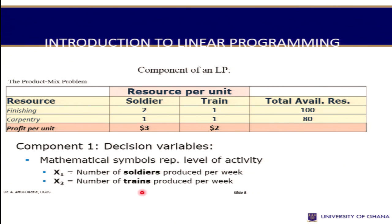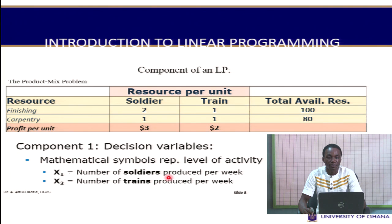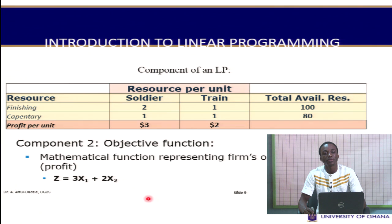In formulating a linear programming model, there are three basic steps. The first is to identify your decision variables — the levels of activity. Here, X1 is the number of soldiers to produce per week and X2 is the number of trains to produce per week. For instance, if X1 equals 4, we produce four soldiers; if X2 equals 5, we produce five trains.